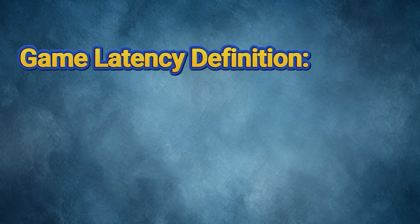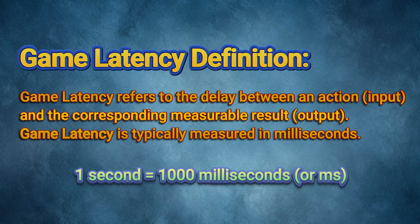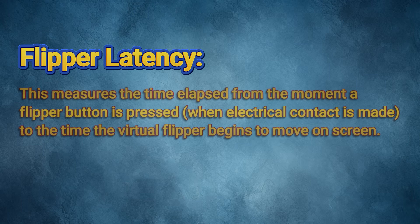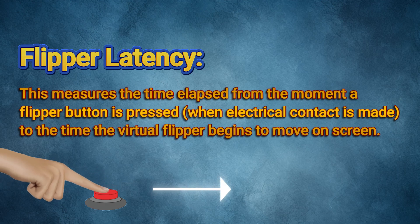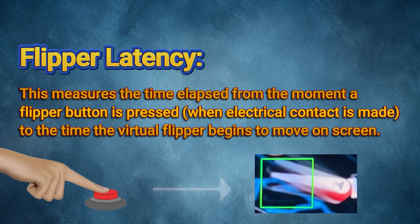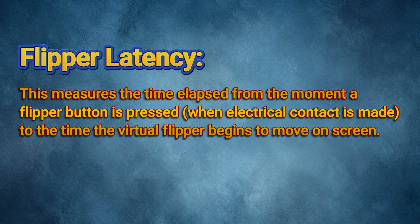Before we continue, it's important to understand what exactly game latency is and how it is measured. Game latency, also referred to as lag, is the delay between an action — such as the press of a flipper button — and the amount of time elapsed when a corresponding measurable output results. One second is equal to 1000 milliseconds, or MS. Flipper latency is determined by measuring the time elapsed from the point the flipper button is pressed to the time the flipper begins to move on screen.